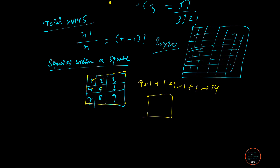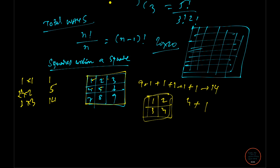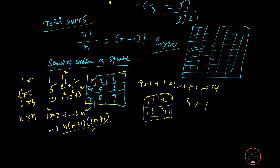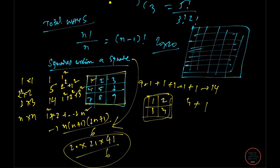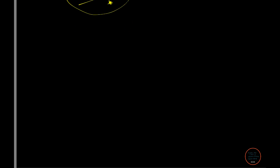For a 2×2 board: 4 unit squares plus 1 big square = 5. For a 1×1: 1 square. For 3×3: 14. The pattern is 1² + 2² + 3² + ... + n². So for an N×N board the formula is N(N+1)(2N+1)/6. For a 20×20 board, just apply this formula and do the calculation.